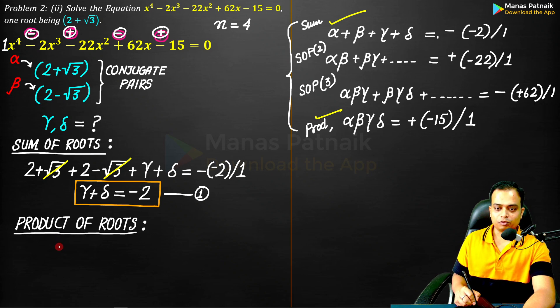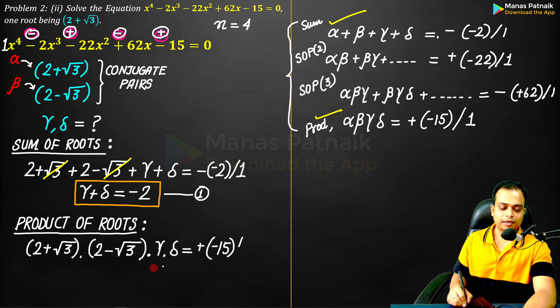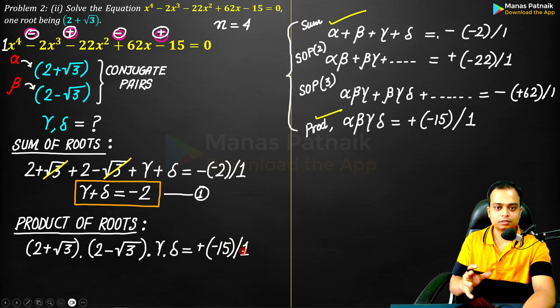Secondly, we are going to go for the product of roots. If you watch carefully, α, β, γ, δ, that means (2 + √3)(2 - √3) × γ × δ. And obviously this equals -(-15)/1. This is something that you now know.